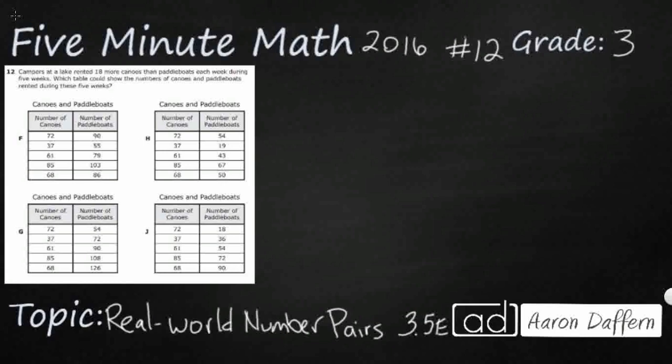So our answer is going to be in the form of these tables. Sometimes we'll call these input-output tables, and we will be looking for a rule or some kind of pattern to go from your left to your right side. Let's look at our problem. Campers at a lake rented 18 more canoes than paddle boats each week during the five weeks, which table shows the number of canoes and paddle boats.